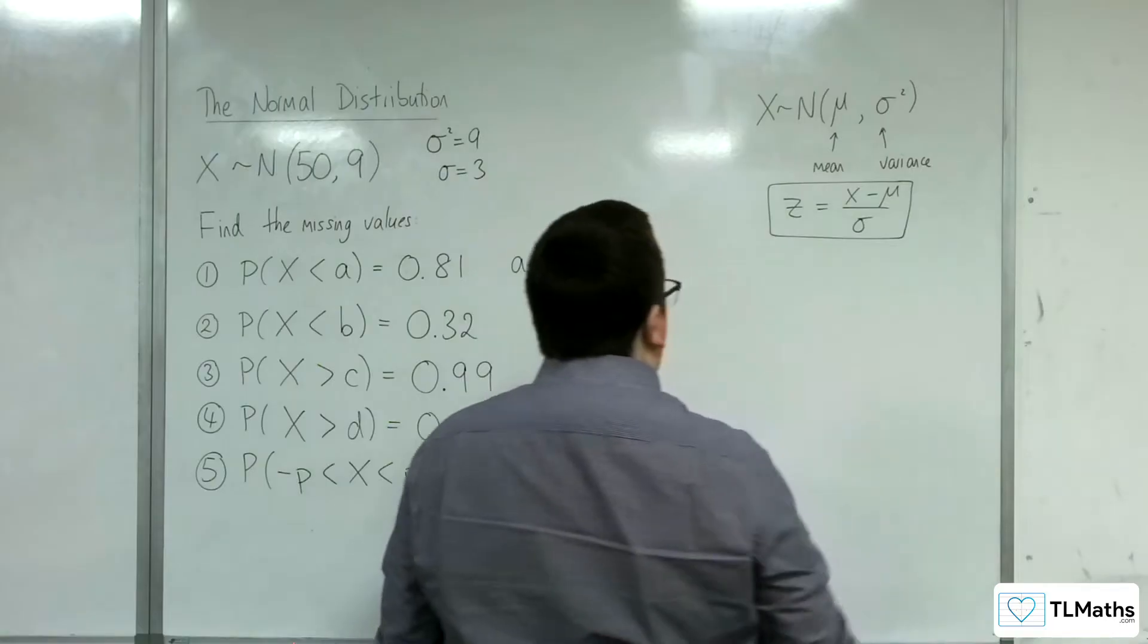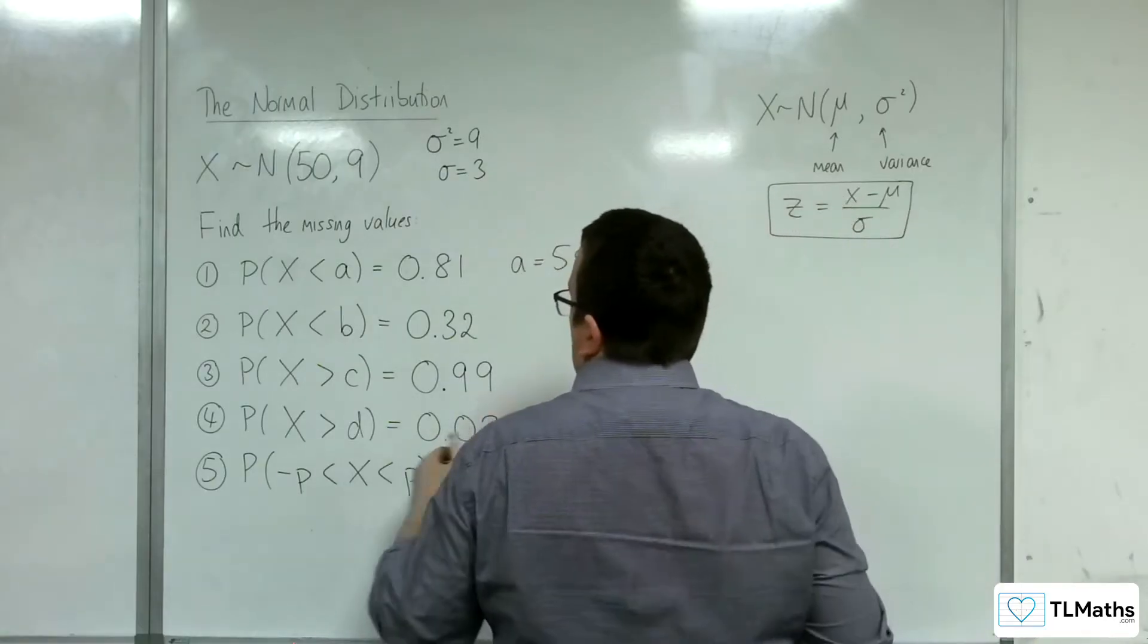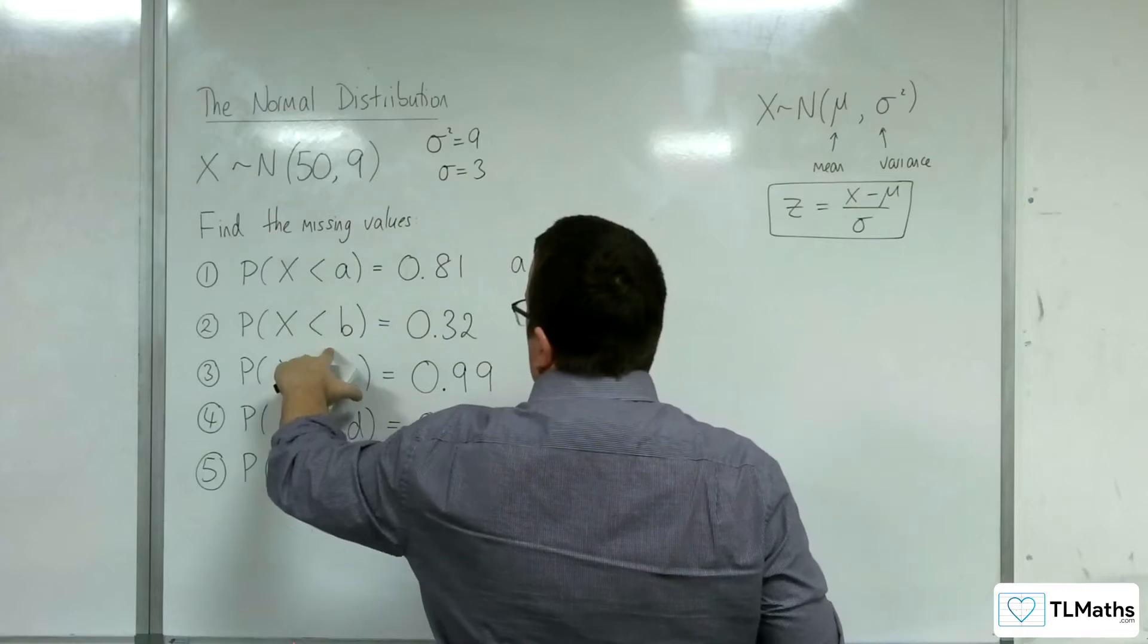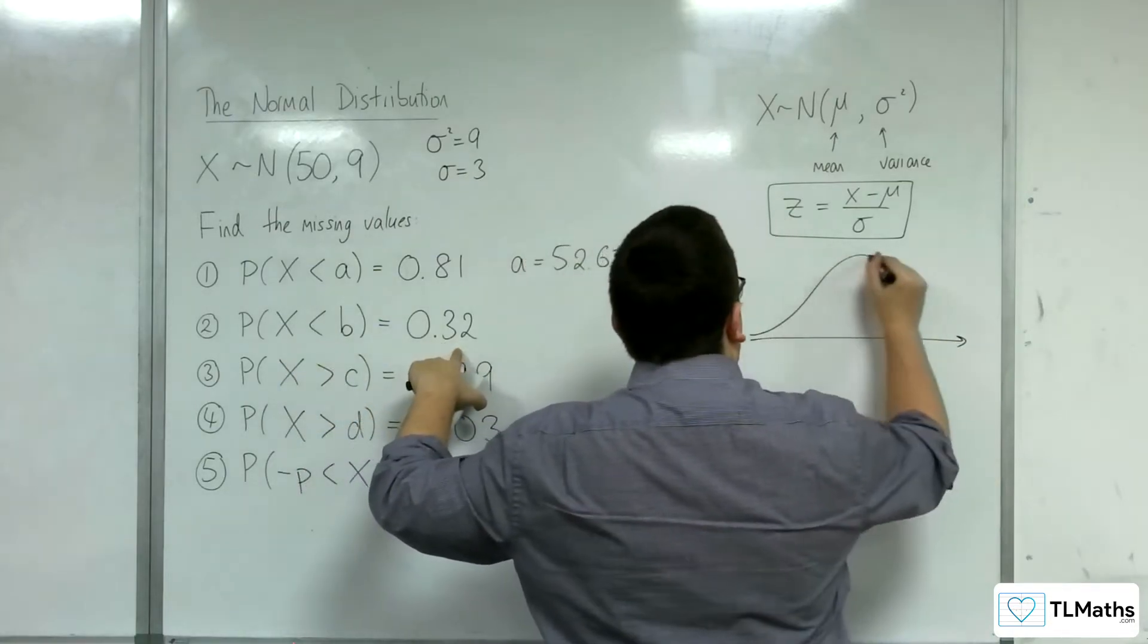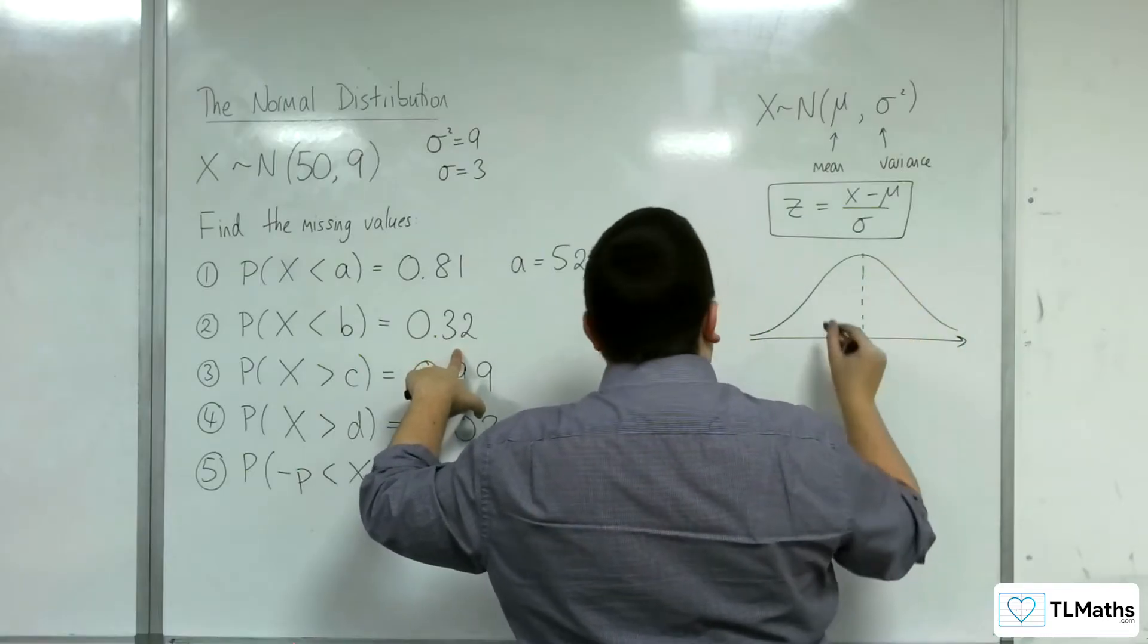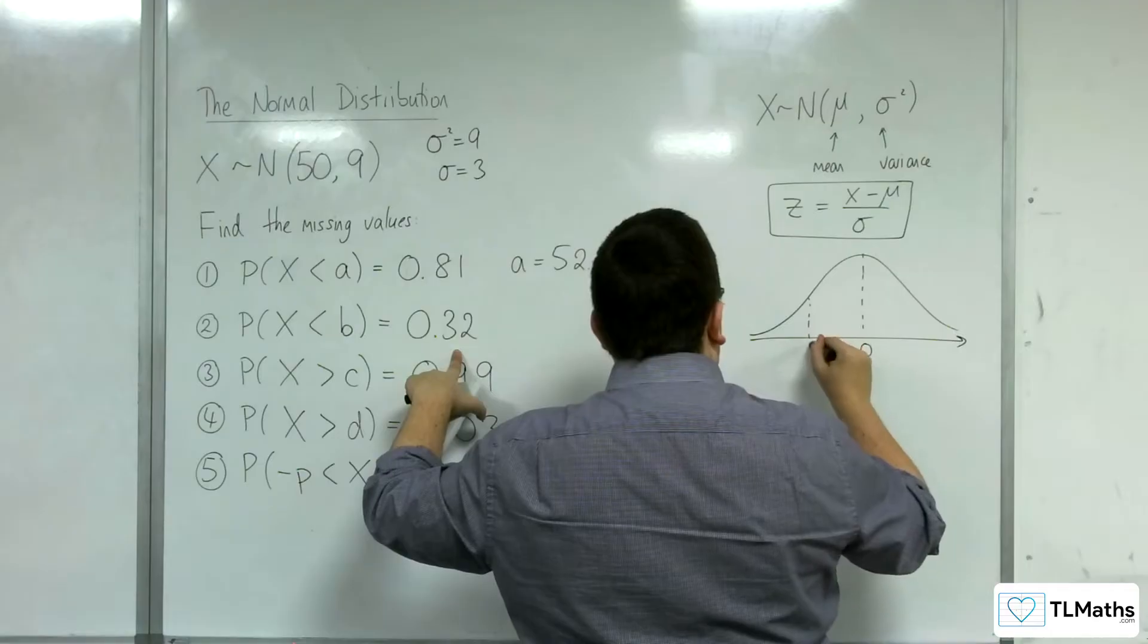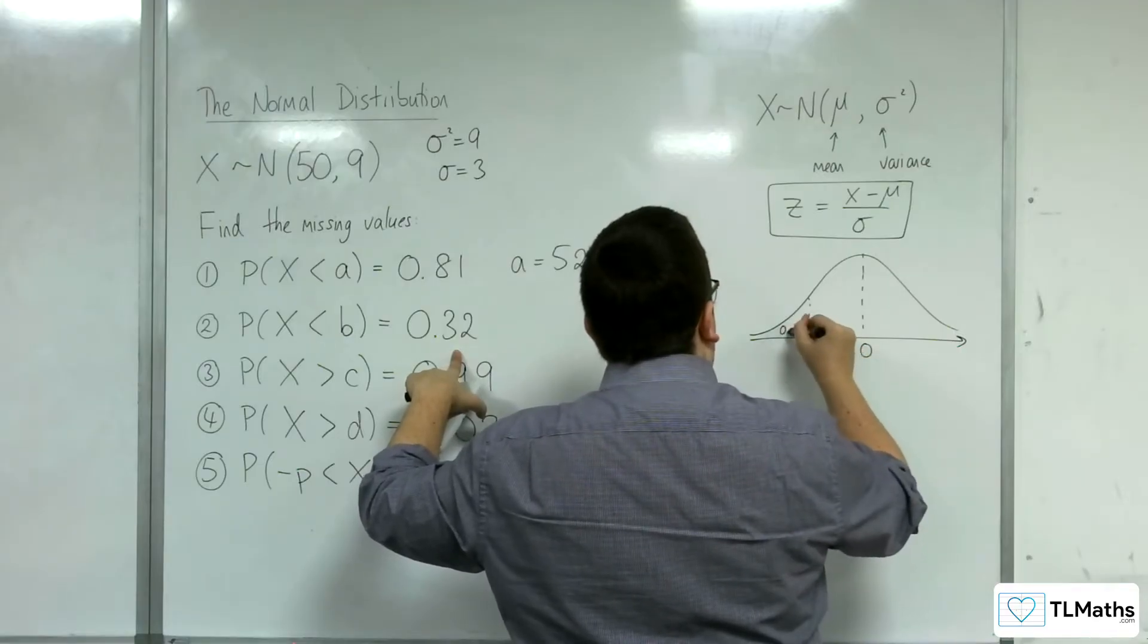So let's try the next one. So number two, the area to the left of B is 0.32. Let's go with the standard normal again. The area to the left of B, so I'm going to put that as z, is 0.32.